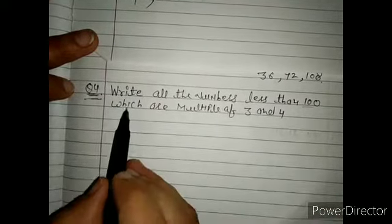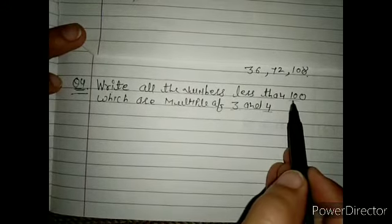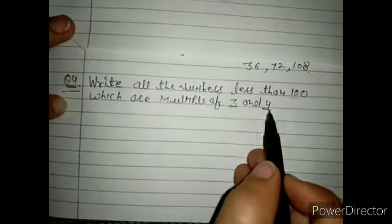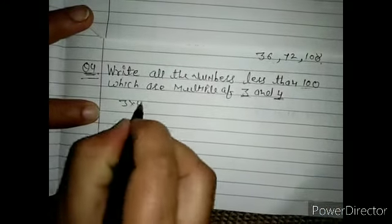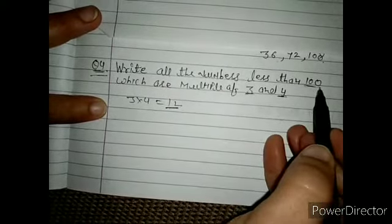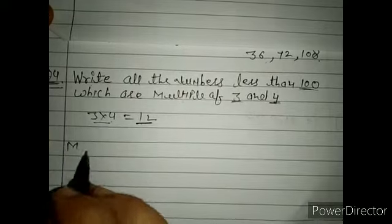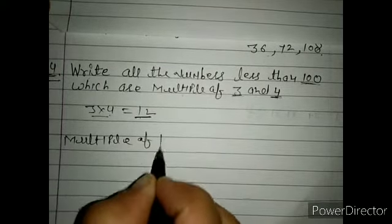Question number 4: write all numbers less than 100 which are multiples of both 3 and 4. The easy method is to find the multiples of 12 (since 3 × 4 = 12), because any multiple of 12 is also a multiple of both 3 and 4.